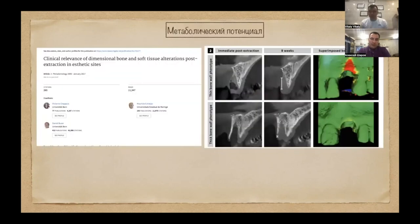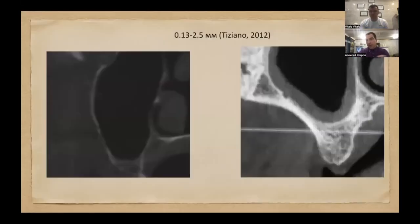По поводу надкостницы и мембраны Шнайдера: в мембране была определённая толщина изначального листка, из которого она формировалась, определённая толщина сосудов, которые остались в ней залегать — хотя они не способны к регенерации при операции синус-лифтинга. Вся нагрузка происходит на надкостничный лоскут. Именно за счёт этого мультипликатора увеличения размеров структур мы получаем такую большую величину.